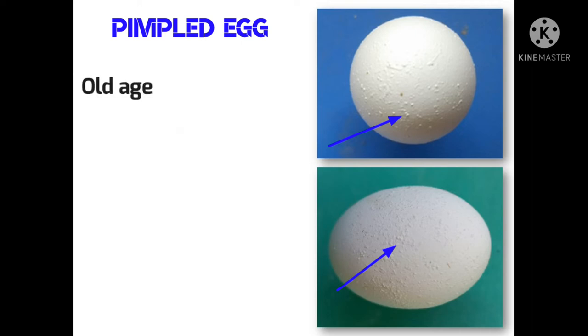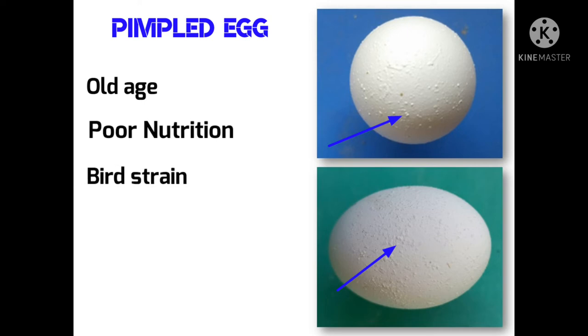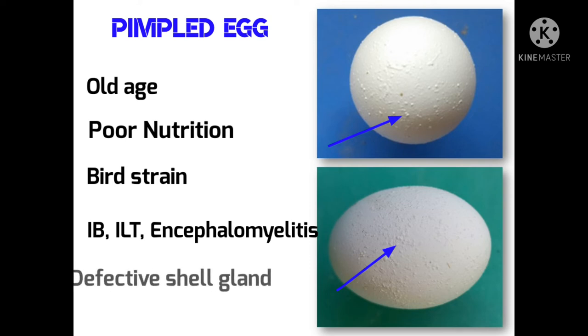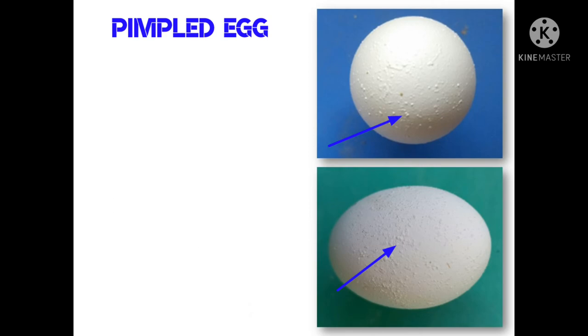Aging of the bird, poor nutrition, and strain of the birds may also cause the problem of formation of pimpled eggs. Diseases like infectious bronchitis, infectious laryngotracheitis, avian encephalomyelitis cause this pimpled egg problem. The presence of defective shell gland and incorrect or change in the lighting program during the laying period also causes the formation of pimpled eggs.